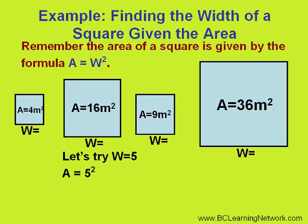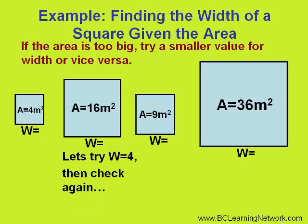We would square 5, which means 5 times 5, and get an answer of 25, which we can see is too large. If the area turns out to be too large, like it was in this case, then the next guess we would try a smaller value for the width.